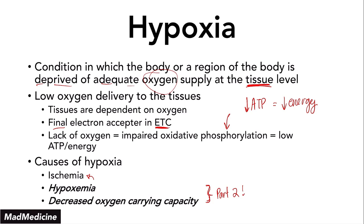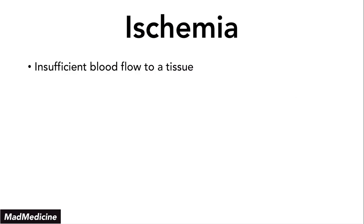Ischemia is when you have insufficient blood flow to a tissue. Remember, hypoxia occurs at the tissue level, and ischemia occurs at the tissue level as well — it is essentially not enough blood going to the tissue. When that happens, you're going to see cellular injury occurring.